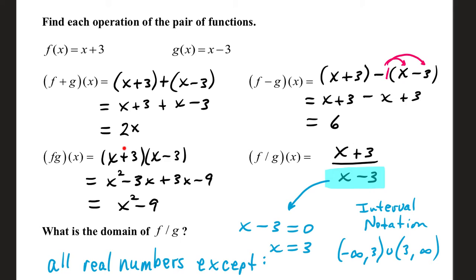With multiplication, x plus 3 times x minus 3, put them right next to each other, and then we can use the FOIL method. First times first is x squared, outer functions negative 3x, inner functions 3x when you multiply, last terms negative 9. The two terms in the middle are like, and they cancel each other out. So we're left with x squared minus 9.